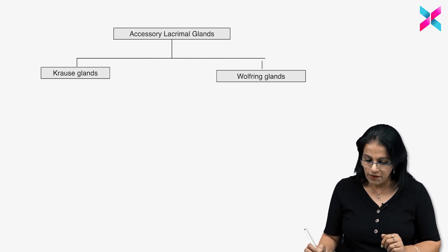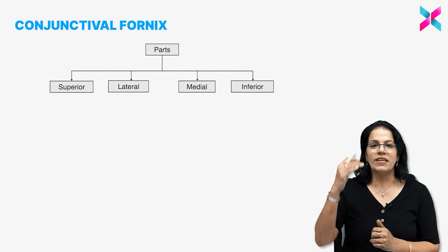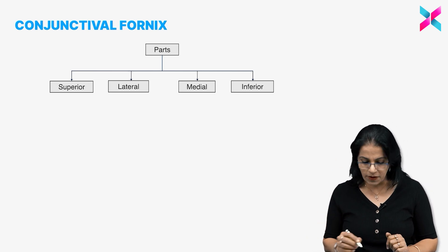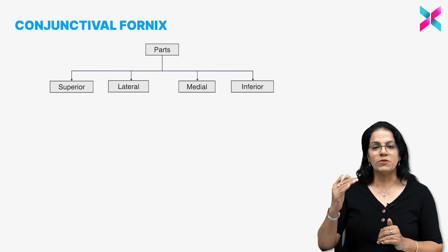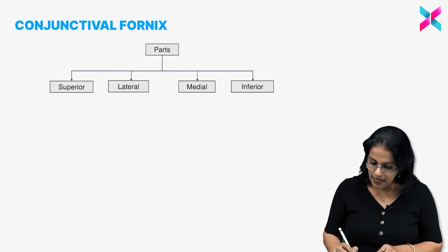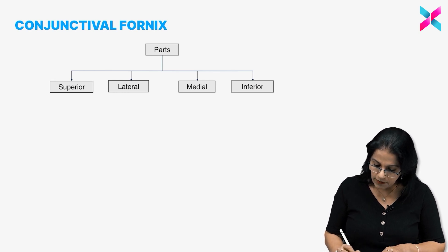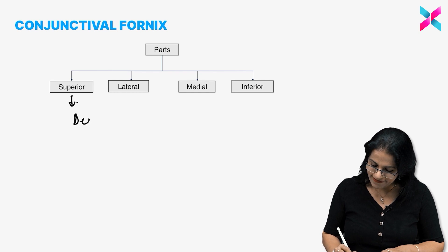What next in anatomy? We have to know that how many fornices are there. Do not say only upper and lower, we have four fornices. Superior, then we have lateral and medial as well apart from superior and inferior. What is very important is that superior fornix is most deepest of all. This is the deepest of all.